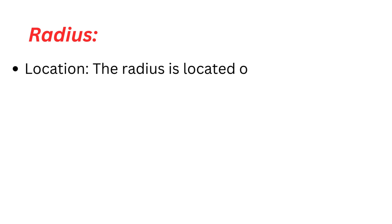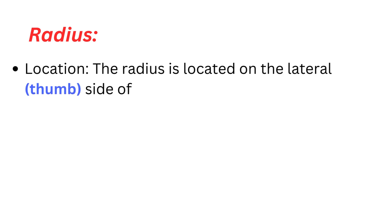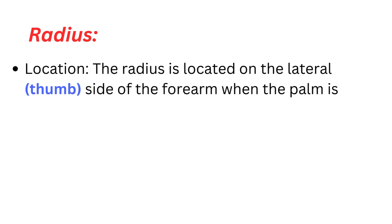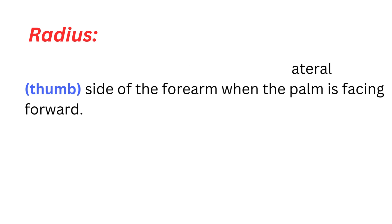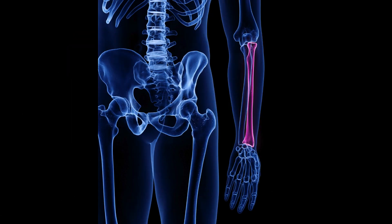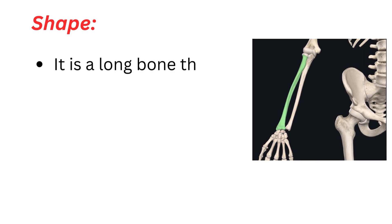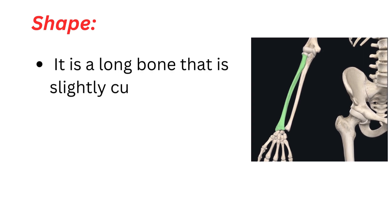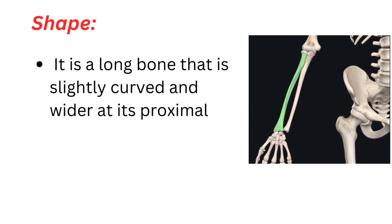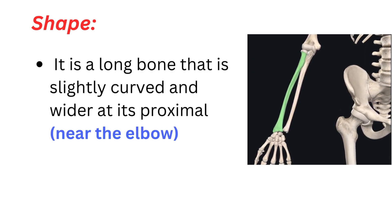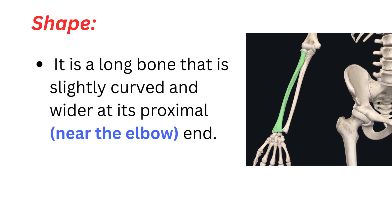Radius location: the radius is located on the lateral, thumb side of the forearm when the palm is facing forward. It is a long bone that is slightly curved and wider at its proximal, near the elbow, end.